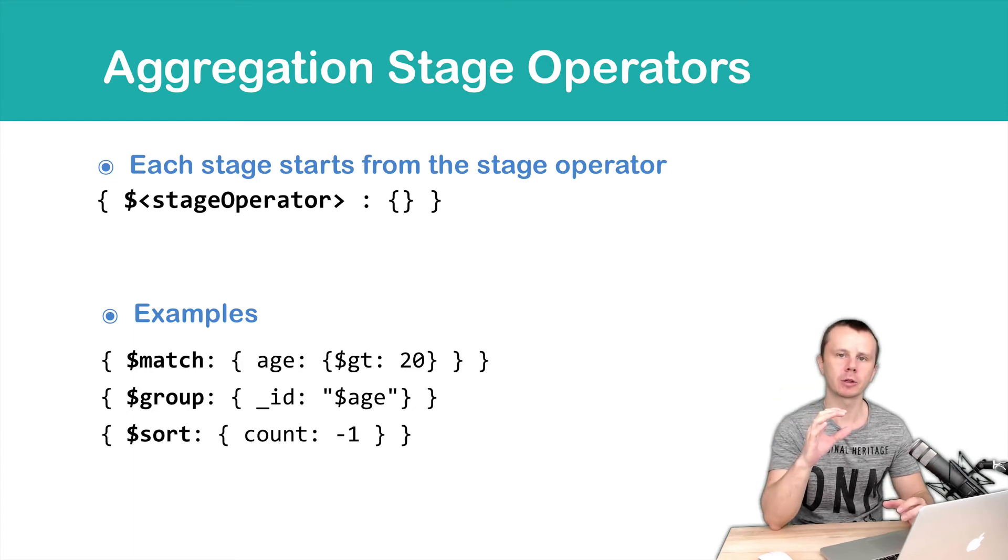So again, stage operator, for example, group or sort, prepended by dollar sign, then colon, and object with key value pairs.